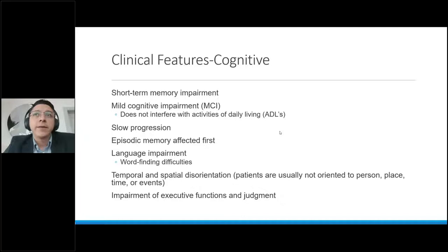And essentially, bathing, being able to cook, manage finances, all the things that you go about on a daily basis. It has a slow progression, and the episodic memory tends to be affected first, with procedural memory tending to be affected towards the latter parts of the disorder. Language impairment is mostly characterized by word-finding difficulties. Temporal and spatial disorientation, these patients unfortunately get to the point that they are not oriented to person, place, time, situation, or events. And there are impairments in executive functions and judgment.